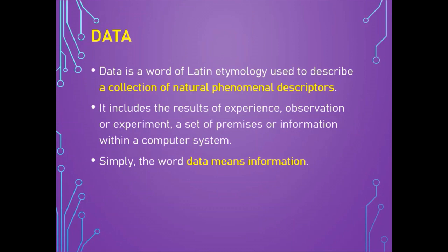Let us first discuss what data actually is. Data is a word derived from Latin etymology, used to describe a collection of natural phenomenal descriptors, including the results of experience, observation, or experiment, a set of premises, or information within a computer system. This may consist of numbers, words, or images, particularly as measurements or observations of a set of variables. Experimental data are the data generated within the context of a scientific investigation. In simple terms, data means information. The information collected from sensors or surveys or from other sources is called raw data. The adjective raw indicates that the information collected cannot be used directly.